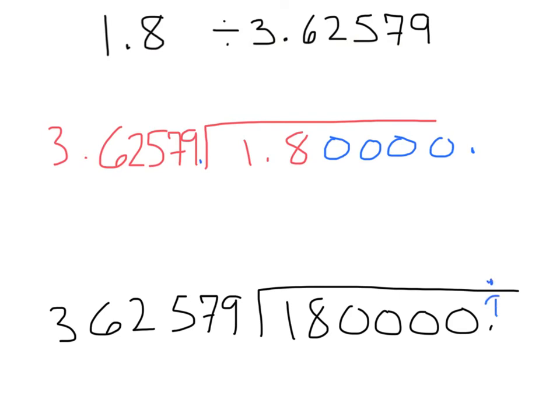Now we would start looking for numbers that 362579 goes into 180000. And you'd continue from there. That number looks too big, so you'd have to add another 0 and see how many times it goes into it. So on and so forth, which could be a lot of work. I know you could do it if you wanted to, but you're probably tired of hearing me talk about dividing decimals by now. So I'm going to sign off.